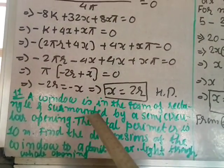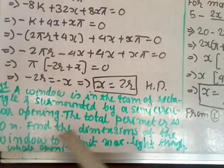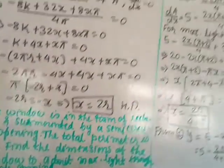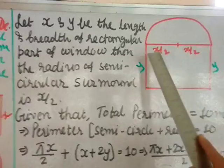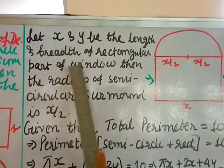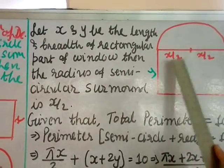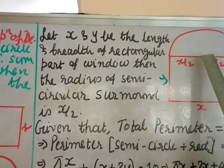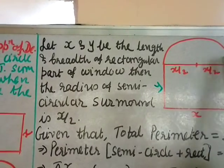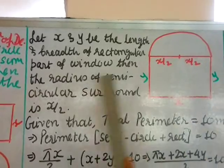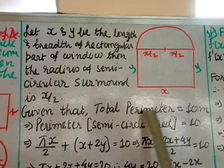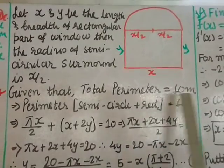Question 11: A window is in the form of a rectangle surmounted by a semicircular opening. The total perimeter is 10 metres. Find the dimensions of the window to admit maximum light. Let x and y be the length and breadth of the rectangular part. The semicircle sits on top, so its radius is x/2.